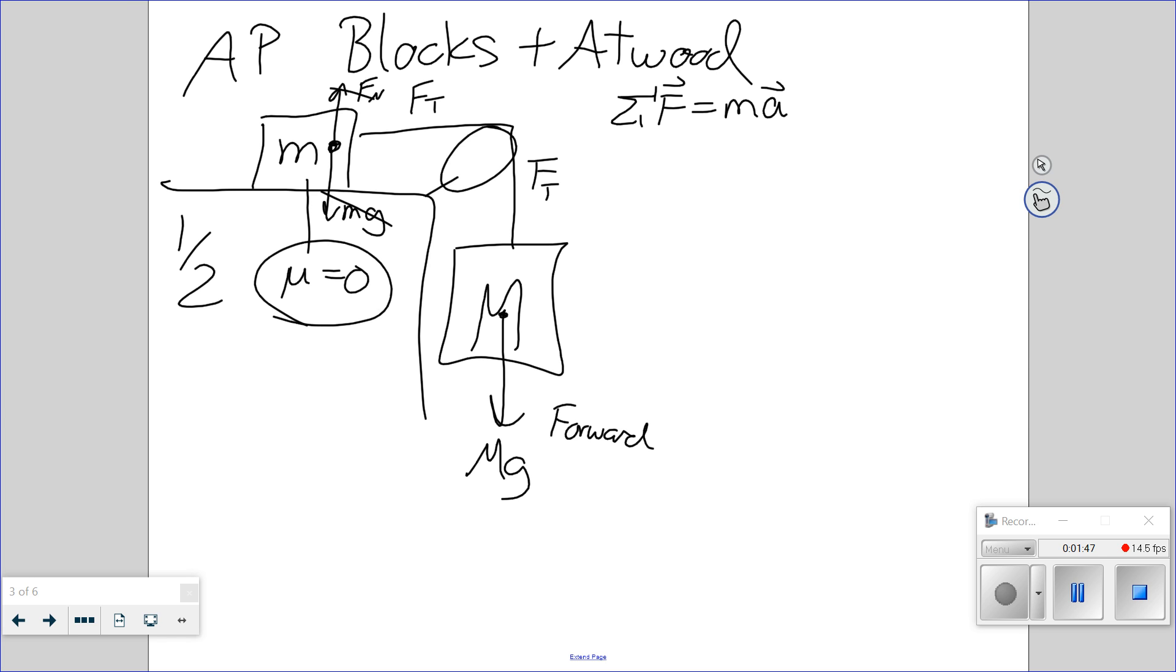And if you actually free body diagrammed this problem, and you had big mg down and the force of tension is a little bit smaller up, and you made two equations, one for each block, and you said they're connected, they have to have the same acceleration, and then substitute it, and you could eliminate the force of friction, it would come out to just this result.